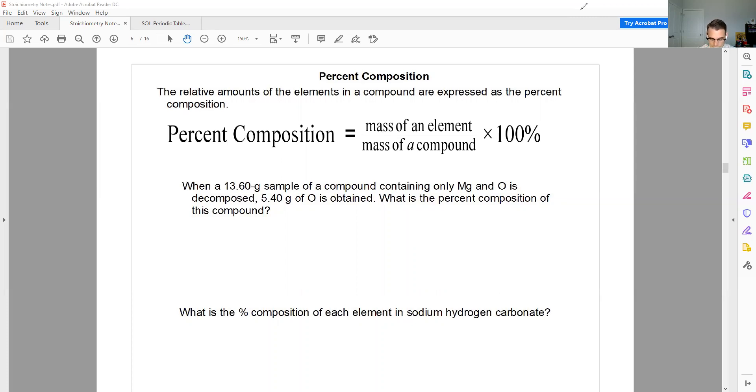The first question. When a 13.60 gram sample of a compound containing only magnesium and oxygen is decomposed, 5.40 grams of oxygen is obtained. What is the percent composition of this compound? Okay. So I know 5.40 grams is oxygen. I know 13.60 grams is the whole thing. How much magnesium is it? Well, that's simple. It's just 13.60 grams minus 5.40 grams. And that will give me a total of 8.20 grams of magnesium. So this is magnesium plus oxygen. That's just oxygen. So the rest would just be magnesium.